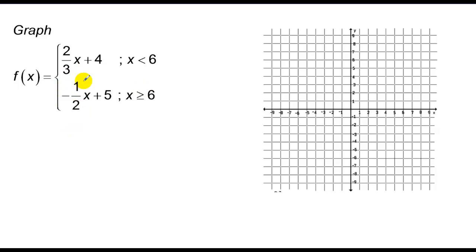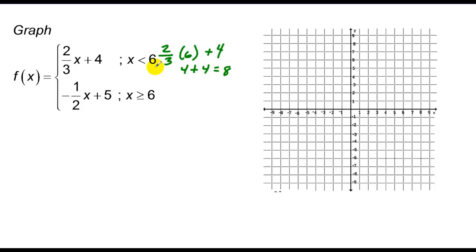Now we have two graphs, both with slope-intercept form. For the first, x is strictly less than 6. I plug 6 into the function: 2 thirds times 6 plus 4 equals 4 plus 4, which is 8. So at x equals 6, the y-value is 8 but not included — open circle. Since I go to the left, I can use the y-intercept of 4, draw both points, and connect the dots to make the line.